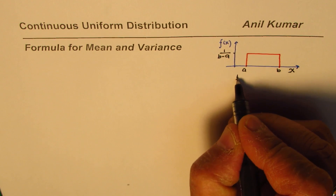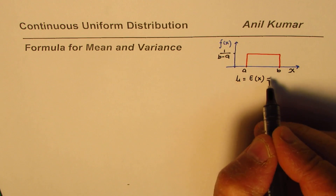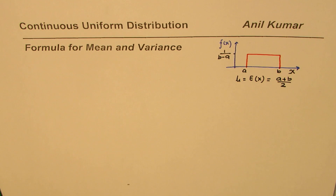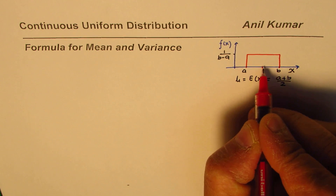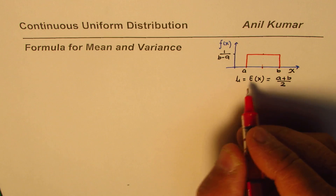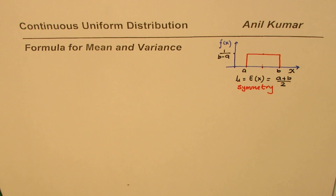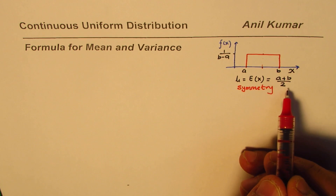As far as the mean is concerned, which could also be written as the expected value, it is the center value. So (a + b) / 2 gives the mean for this kind of distribution. From symmetry, the middle value divides the distribution into exactly half, so the mean is (a + b) / 2.